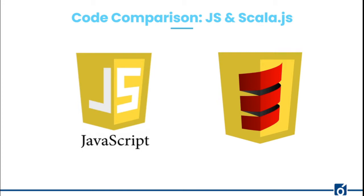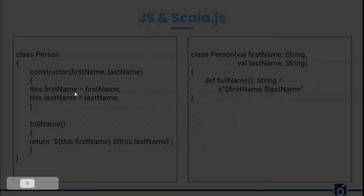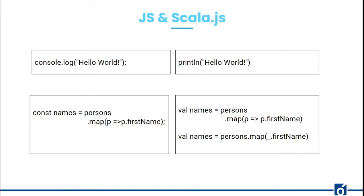Moving towards the comparison between JavaScript and Scala.js — you can see the logos, with Scala in the center instead of JavaScript. Here you can see a simple class: one in JavaScript, one in Scala.js — a class Person with constructor first name, last name, and a full name method. On the right-hand side you can see the same class in Scala, and comparing the number of lines, it's much smaller and more concise in Scala. Also take a look at console.log 'hello world' versus println 'hello world' — how easy for a Java developer. A common code can be shared between JavaScript and JVM code.